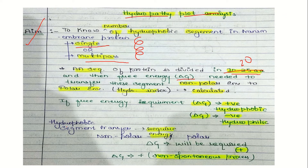If we are talking about a hydrophobic segment being placed into a polar environment, that is not a spontaneous or favorable process. We have to supply energy. This means delta G will be positive for hydrophobic segments — energy is required, and the process is non-spontaneous.